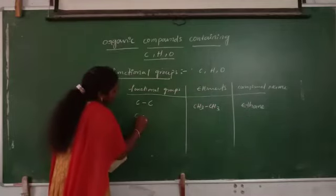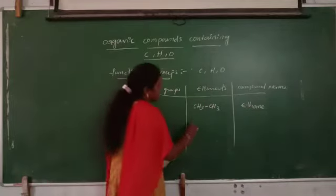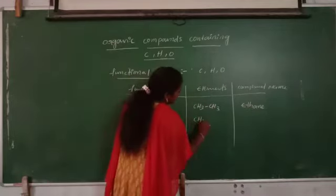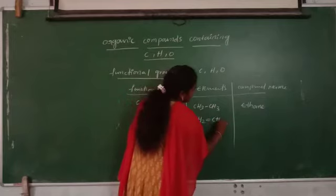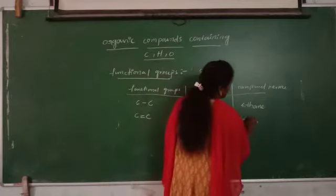And second one is C double bond - carbon to carbon double bond. CH2 double bond to CH2. Ethene.